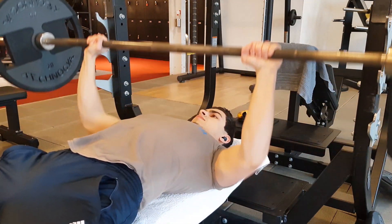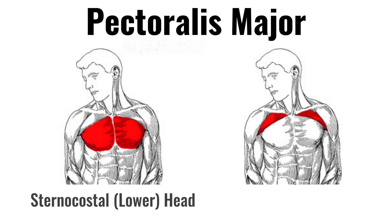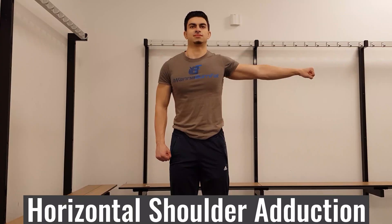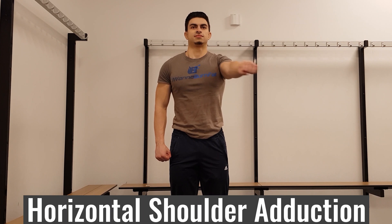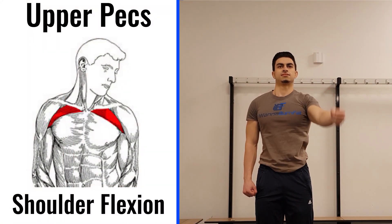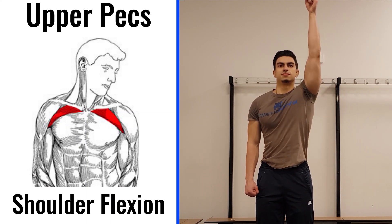The main muscle we are looking to train to develop your chest is the pectoralis major. The pec major has two heads: the sternocostal or lower head, and the clavicular or upper head. Both heads of the pec train horizontal shoulder adduction, which occurs when you move your upper arm towards and across your body. The upper head of your pec major also contributes to shoulder flexion, which occurs when you raise your upper arm to the front. Knowing this, we can come up with ideas on how to train different areas of your chest with different exercises.